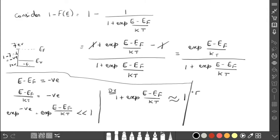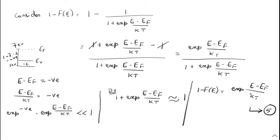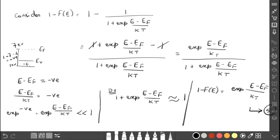Therefore 1 minus F(E) ≈ exp((E − EF) / KT). The total denominator becomes 1. This is equation number 5. So our duty now is to substitute Z(E) · dE from equation 4 and [1 − F(E)] from equation 5 into equation 2.